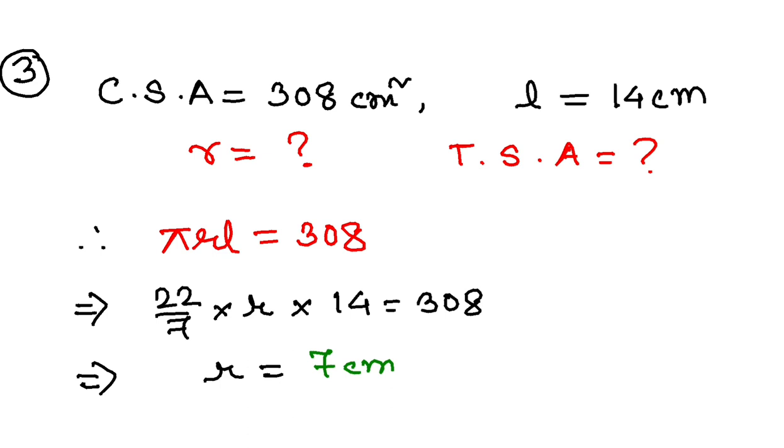Once you know the value of r, you can easily find the total surface area. The formula is πr into L plus r. r is 7, L is 14, π is 22 by 7. You can substitute all the values and calculate. The TSA you should get is 462 centimeter square. That is question number 3.